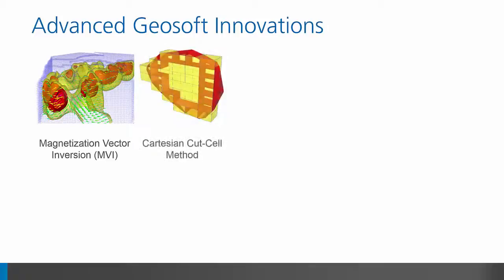Cartesian cut-cell mesh geometry, when compared to regular mesh geometry found in other inversion algorithms, allows for a far better representation of topography. This allows you to remove the noise due to terrain in your models and gives you a better location of possible targets.